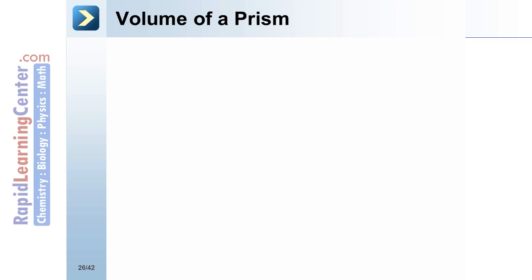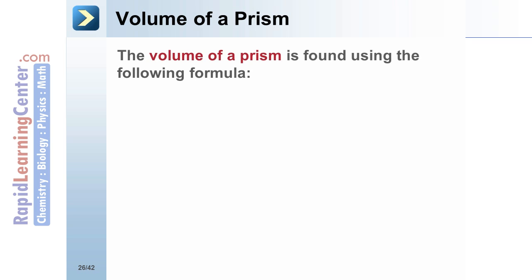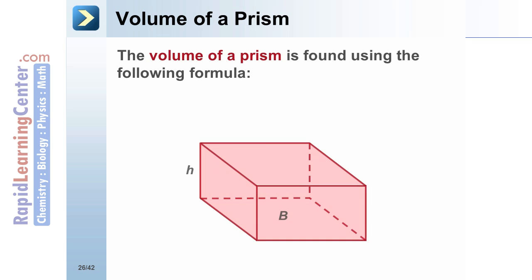Volume of a prism. The volume of a prism is found using the following formula: V equals B times H, where B is the area of the base and H is the height of the prism.